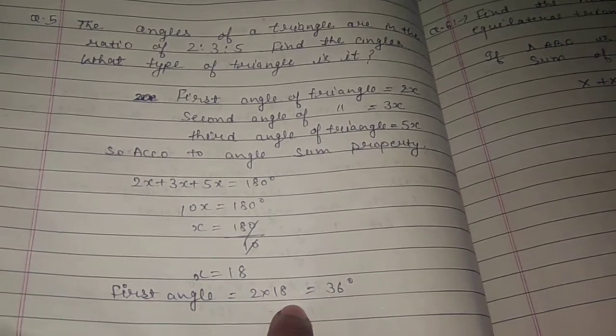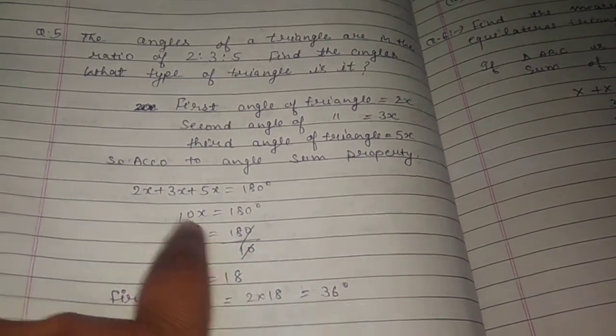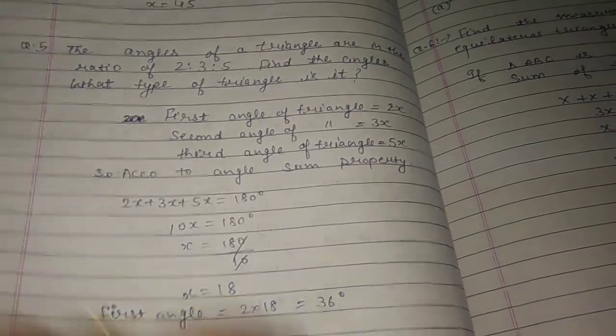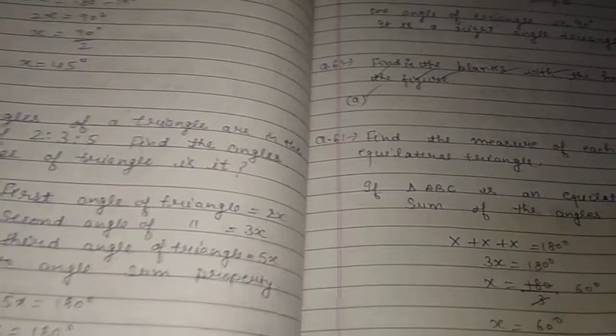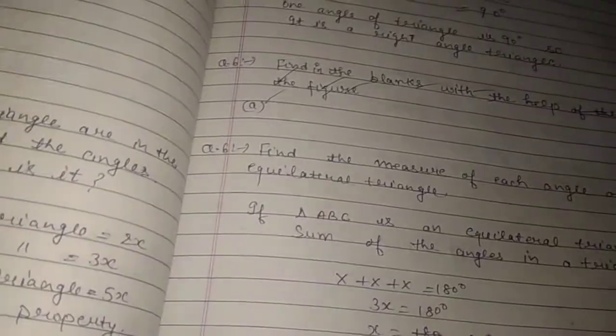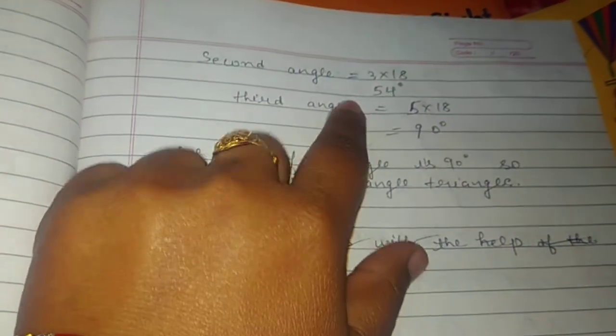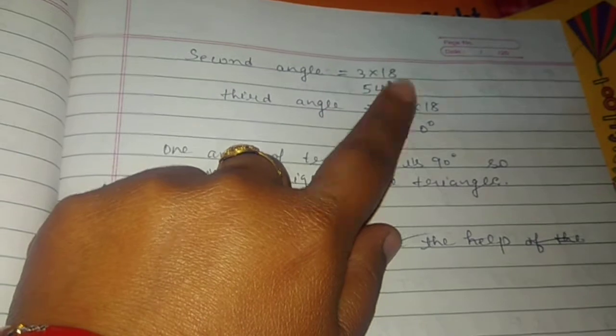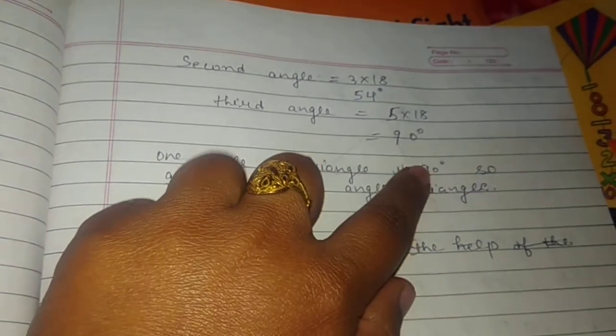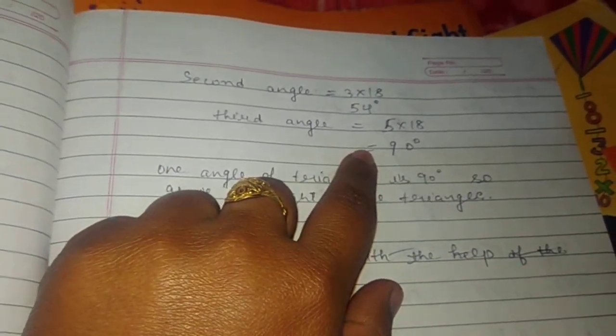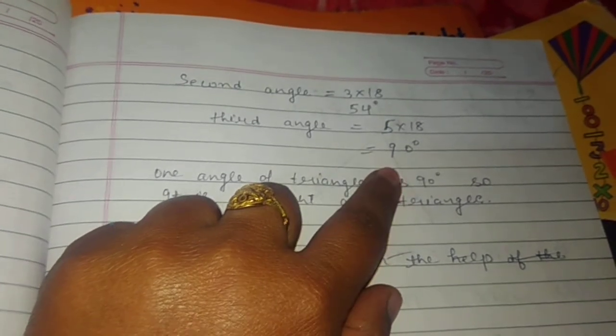First angle equals 2 times 18, which equals 36 degrees. Second angle equals 3 times 18, which equals 54 degrees. And third angle equals 5 times 18, which equals 90 degrees.